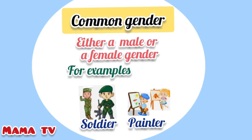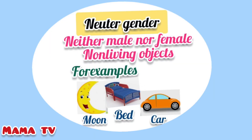soldier — for he and she we use soldier. Panther — for he and she we use panther. The last one is neuter gender. Neuter gender is neither male nor female. Neuter gender is used for non-living things. For example,